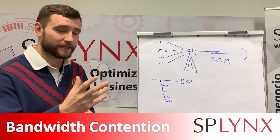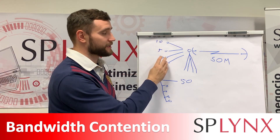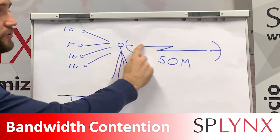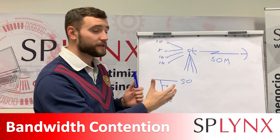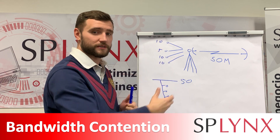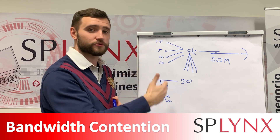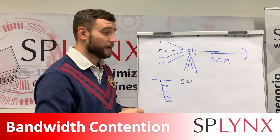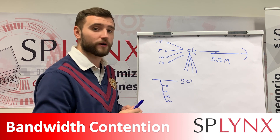What does contention mean? Let's take a look at this example. When we have several customers connected through access points to a tower, and that tower is connected to the network with a 50 Mbps bandwidth line — what will happen if all customers start downloading simultaneously, and some of them are using torrents and generate a lot of packets per second? It will lead to instability of this line and packet loss for all customers.